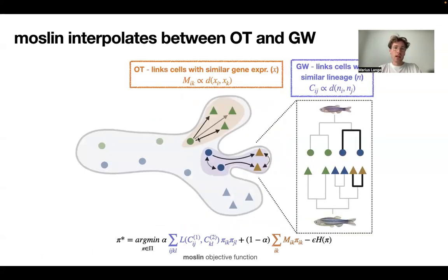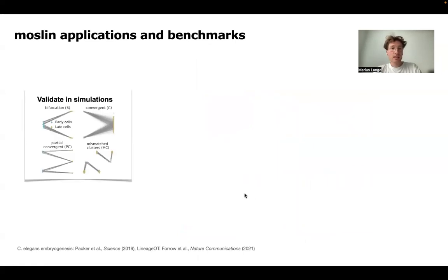So the final algorithm sort of balances between these two terms in the objective function, trying to find a mapping that is consistent in gene expression. So minimizing the overall distance that cells have to travel in gene expression, while also being consistent with the lineage information.